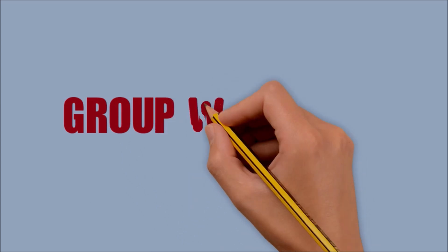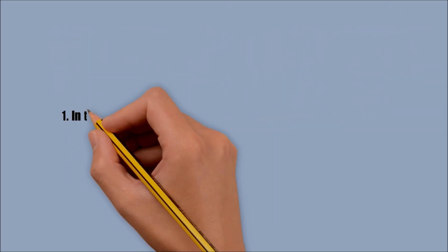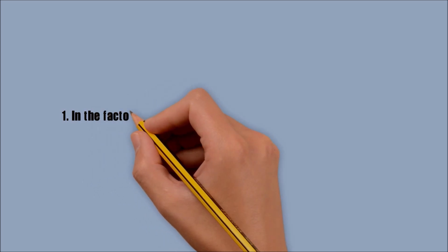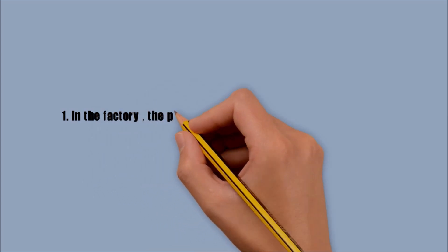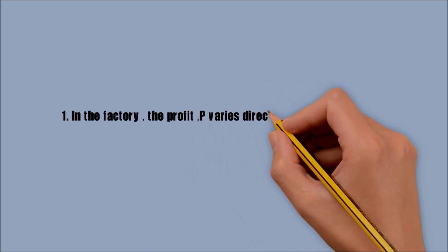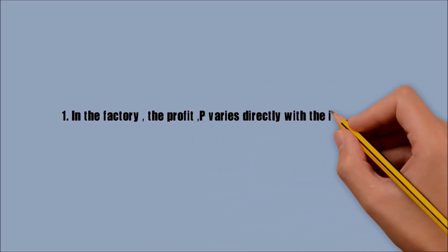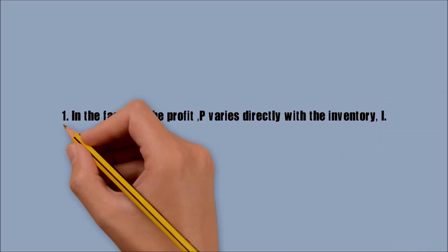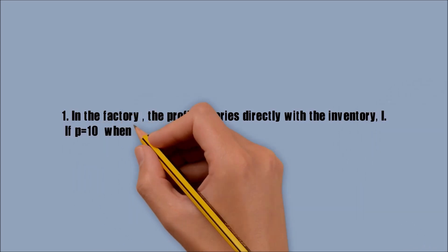Let's have a group work. Number 3. In the factory, the profit P varies directly with the inventory I. If P is equal to 10 when I is equal to 20, find P when I is equal to 50.